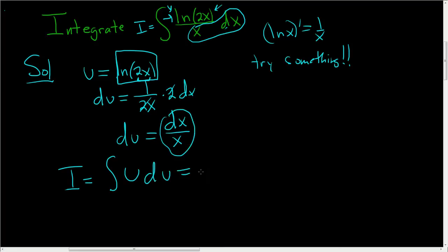This is super easy to integrate. There's a 1 here, so we use the power rule. So, we get u squared over 2 plus our constant. But u was the natural log of 2x.